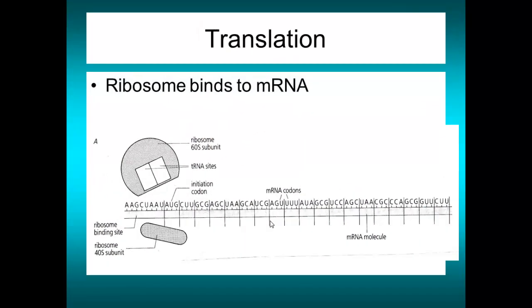On to translation. The images here are older and more stylized; a more accurate representation will be shown later, along with a link to a useful YouTube animation. The ribosome comes along — it has two parts, the 60S subunit and the 40S subunit — and it looks for the initiation codon A, U, G, binding over that codon.